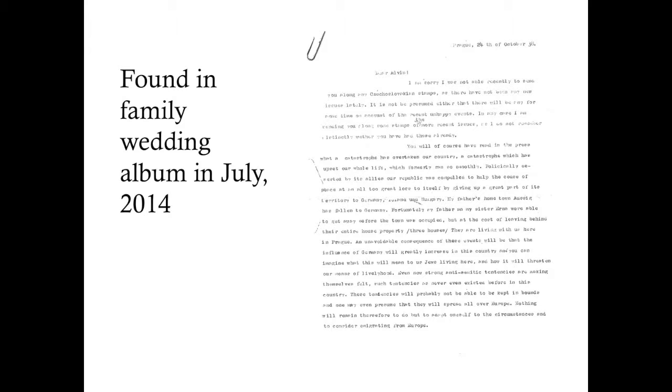'I'm very sorry to not be able to send along Czechoslovakian stamps.' We found that the stamp on the initial letter — the envelope was also saved — had stamps from Czechoslovakia. He was looking for more stamps to send letters out of the country. He recounts what's happening. The second paragraph reads: 'You will of course have read in the press what a catastrophe has overtaken our country, a catastrophe which has upset our whole life, which formerly ran so smoothly. Politically deserted by its allies, our republic was compelled to give up a great part of its territory to Germany.' He's lost his three houses.